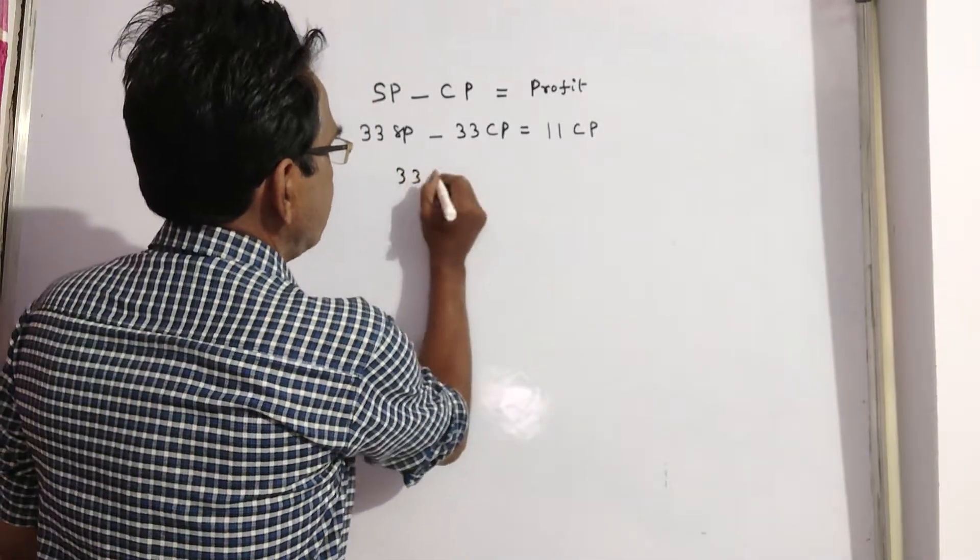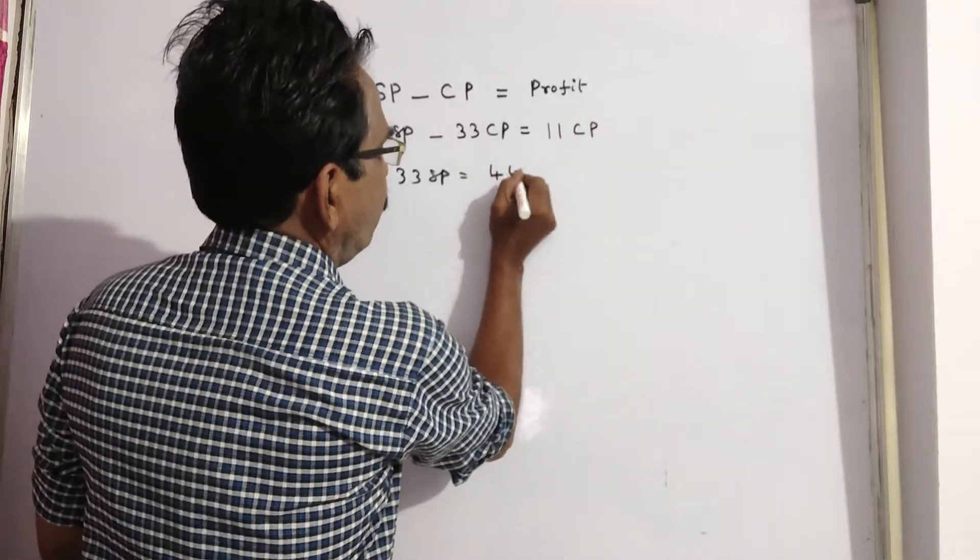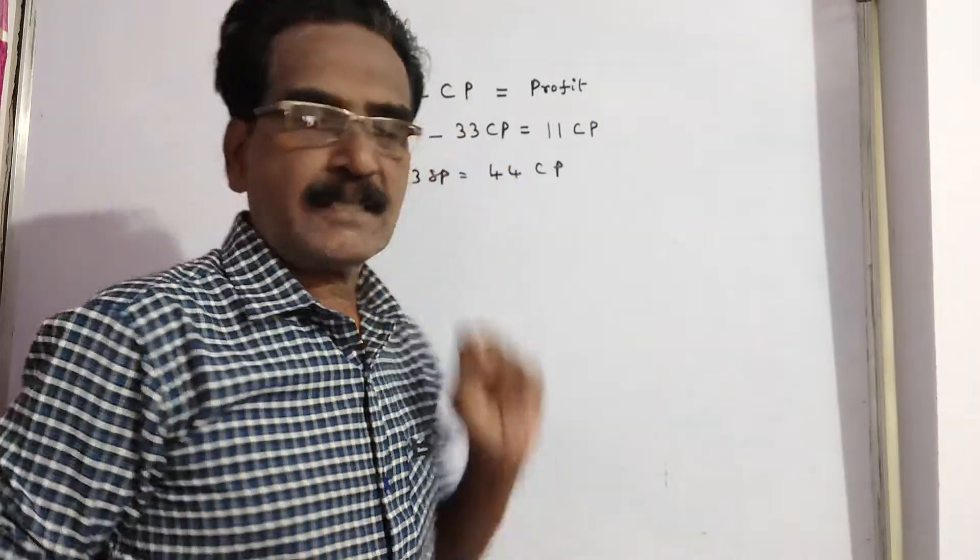See, 33 SP is equal to 33 plus 11, 44 CP. Now, after arriving at this step, say cost price 100.